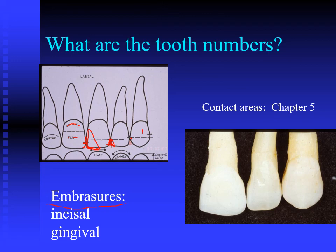From the facial view, you can see an incisal embrasure and a gingival embrasure. Of the four embrasures that form from an interproximal contact, from the facial view you can see two of them: the incisal embrasure and the gingival embrasure. In ideal tooth form, we'd like each embrasure to be a mirror image of the other side — making that as close to a mirror image as possible gives you a better relationship when waxing and restoring teeth.